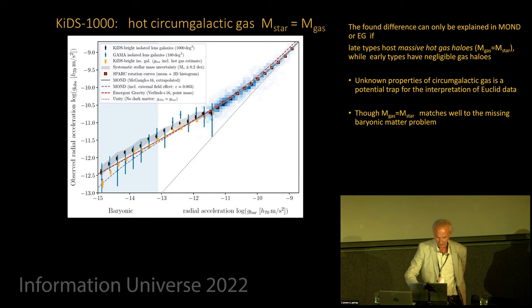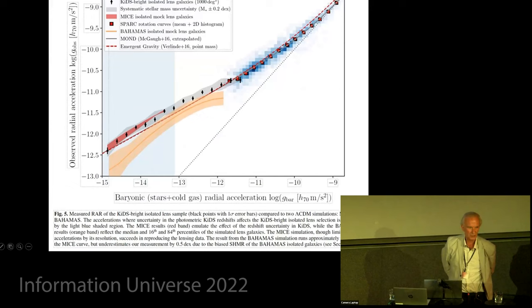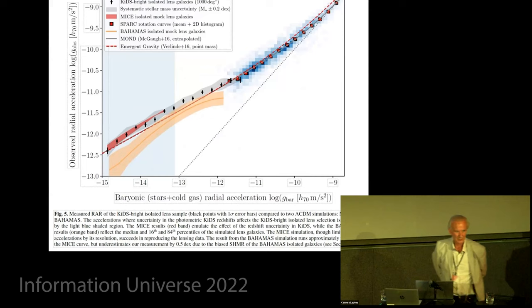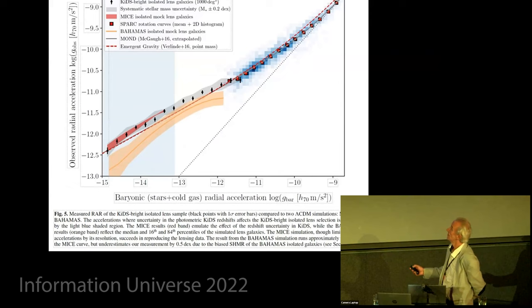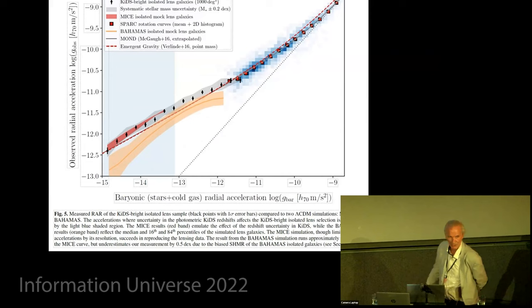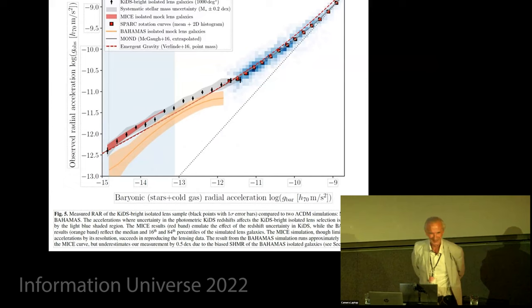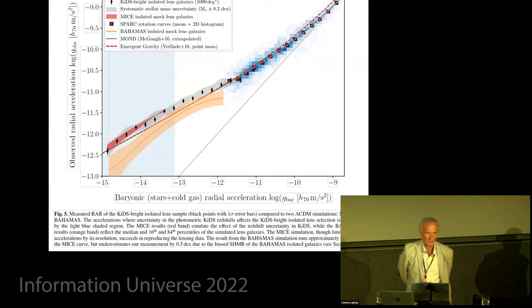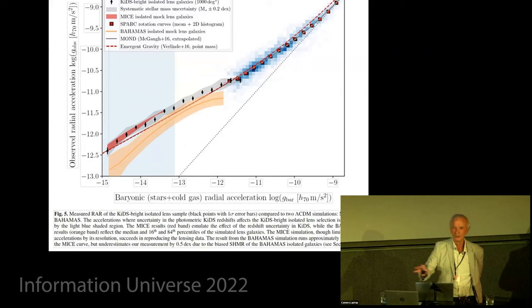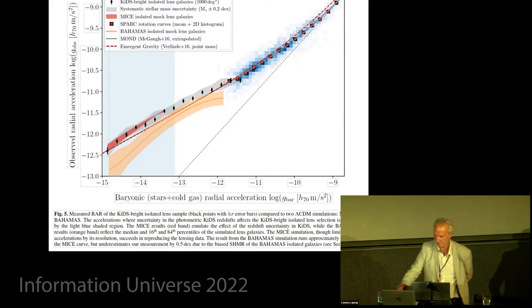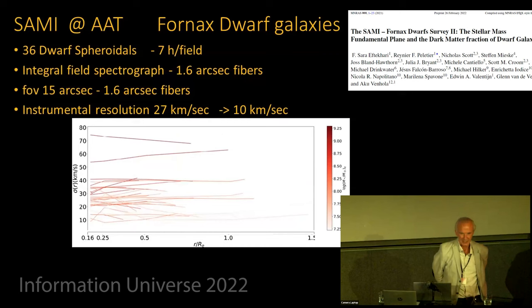Since I'm running out of time, I will be very short about the simulations. Kyle Oman did a lot of simulations, seeing whether we could produce the RAR from simulated data. In short, the BAHAMAS don't do very well, and the MICE simulations do well, but they have been tuned to observational data, so I'm not sure how independent this is. But it shows that if you tune your data, then you can have a fit which is corresponding to predictions of Lambda-CDM.